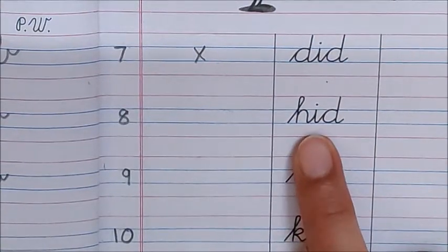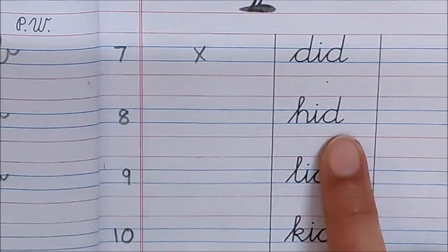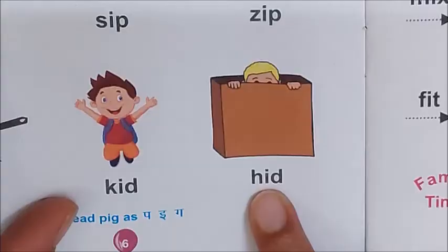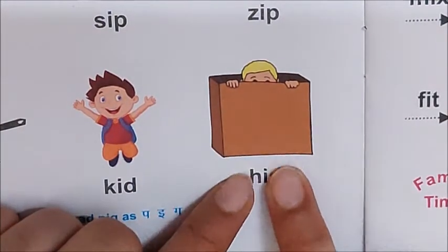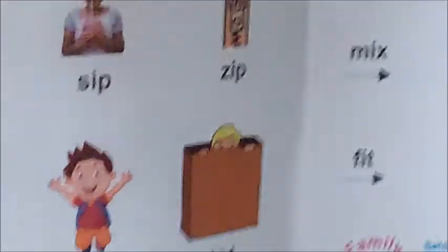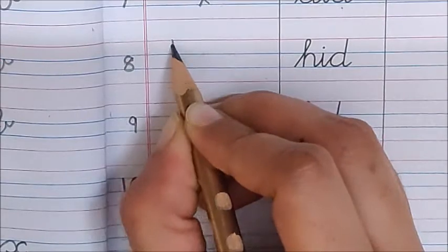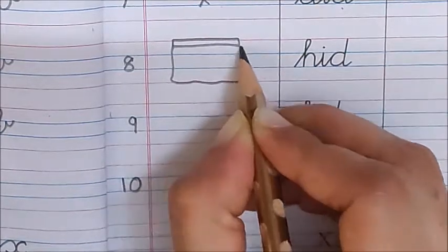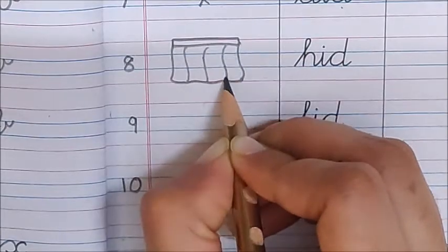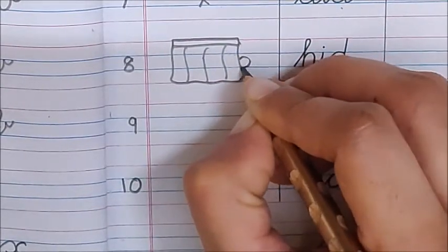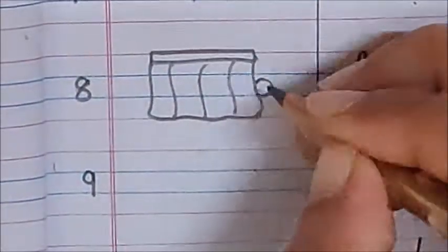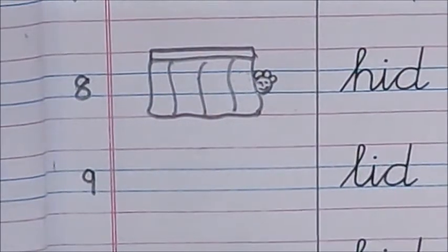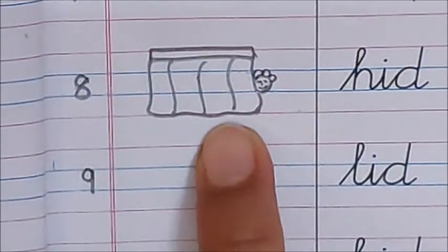Now, next word. H-i-d. Hid. H-i-d. Hid. Hid means chupna. Like, in your reader, you saw this boy hiding in a box. Woh box ke andar chup kia hai. Hid. So, here we will draw another picture. I am drawing a rod and these are the curtains. These are the curtains. And, look here. A boy is hiding behind curtains. He hid behind the curtains.